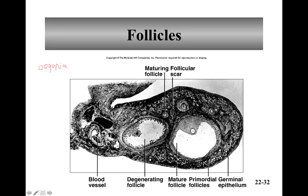Women, when they're born, have about half a million of these primordial follicles. But by the time they reach puberty, they only have about 10% of that left. And then over the course of their reproductive life, they're only going to release 400 to 500.